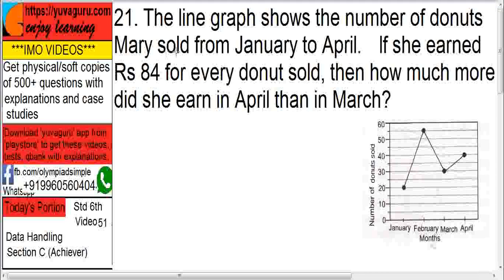The line graph shows the number of doughnuts Mary sold from January to April. If she earned Rs.84 for every doughnut sold, then how much more did she earn in April than in March?